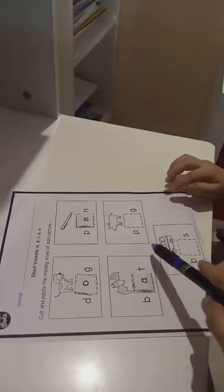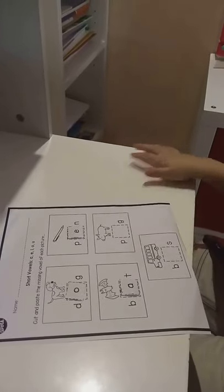What is this picture? P. I. G. Pig. Yeah. What is the missing vowel? Short I.